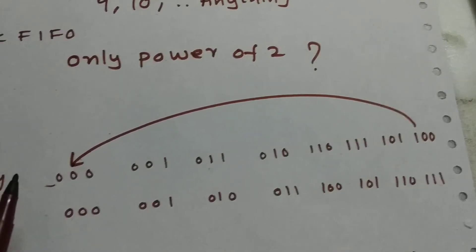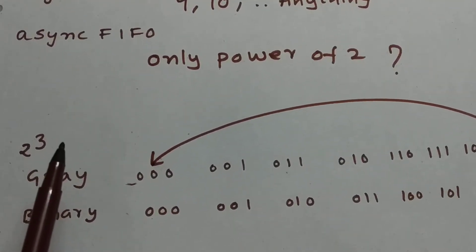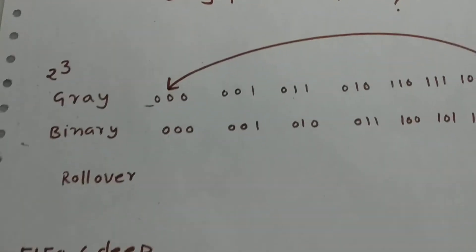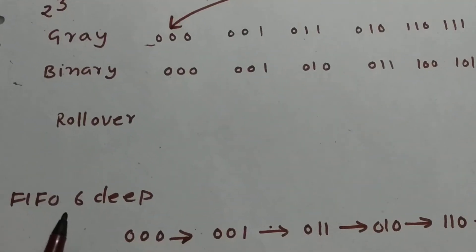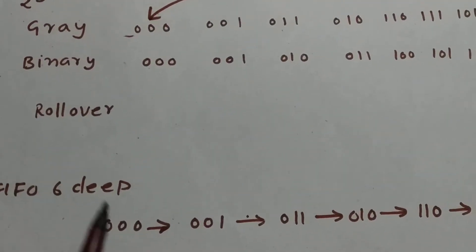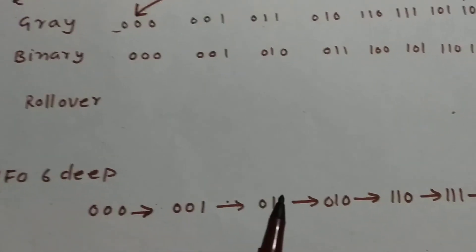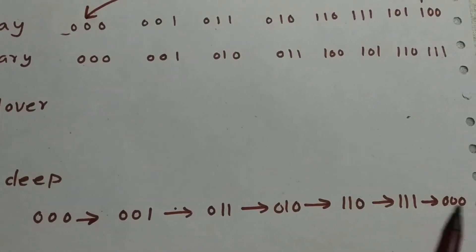So let us consider a depth which is not the power of 2. Let us say FIFO depth of 6. And this is the gray code of 0, 1, 2, 3, 4, 5.